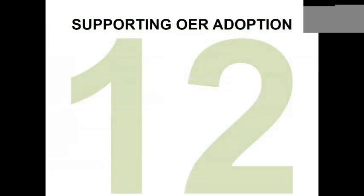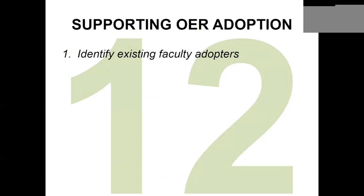I want to share about a dozen strategies that I've seen work quite effectively, especially coming out of libraries. First: identify the people who are already doing what you want others to do. These are people using open educational resources without knowing what an OER is — people assigning TED talks, using public domain or open data sets, assigning open access articles for upper-level courses, perhaps already using open textbooks. Identifying them and helping them appreciate that what they're doing is open education — getting that self-identification — is really key. No behavior change required.